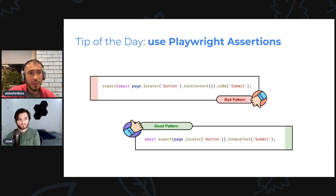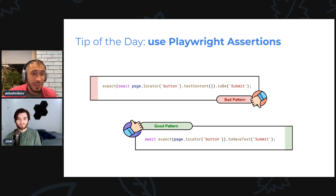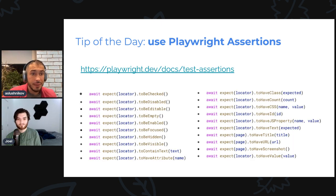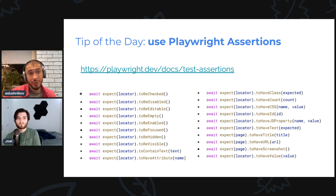Instead, you should await for the button to have certain text using a web-first assertion. In the good pattern you use `page.locator('button').toHaveText('Submit')`. We have this tip of the day because we see more and more people using the bad pattern instead of the good one. The good pattern solves 99% of flakiness issues. We have a whole lot of different web-first assertions — please read through the documentation page and use them all the time.